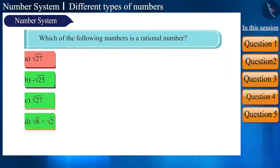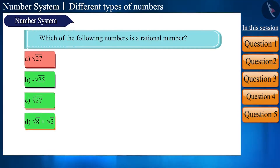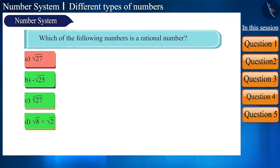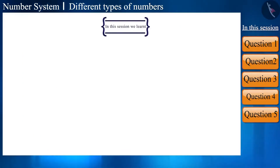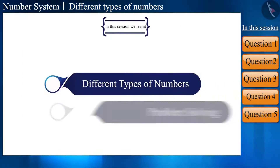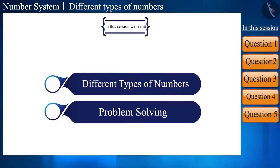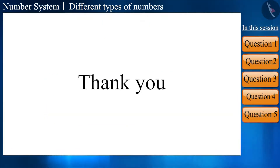Friends, at first it may seem there are many irrational numbers visible, but when we closely observe, only one number turns out to be an irrational number. That's all in this video. In this session, we solved questions based on different types of numbers. See you in the next video. Thank you.